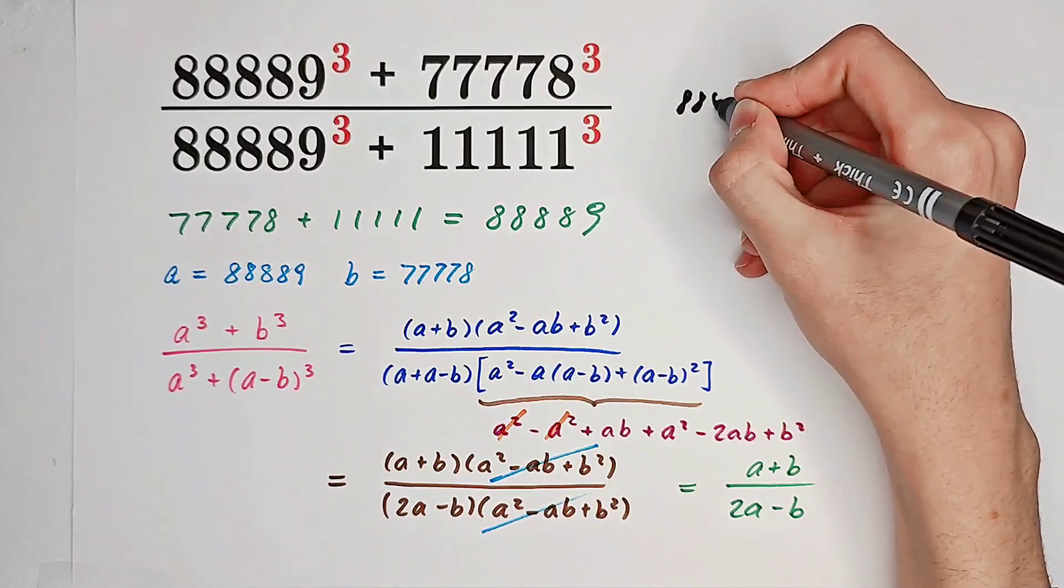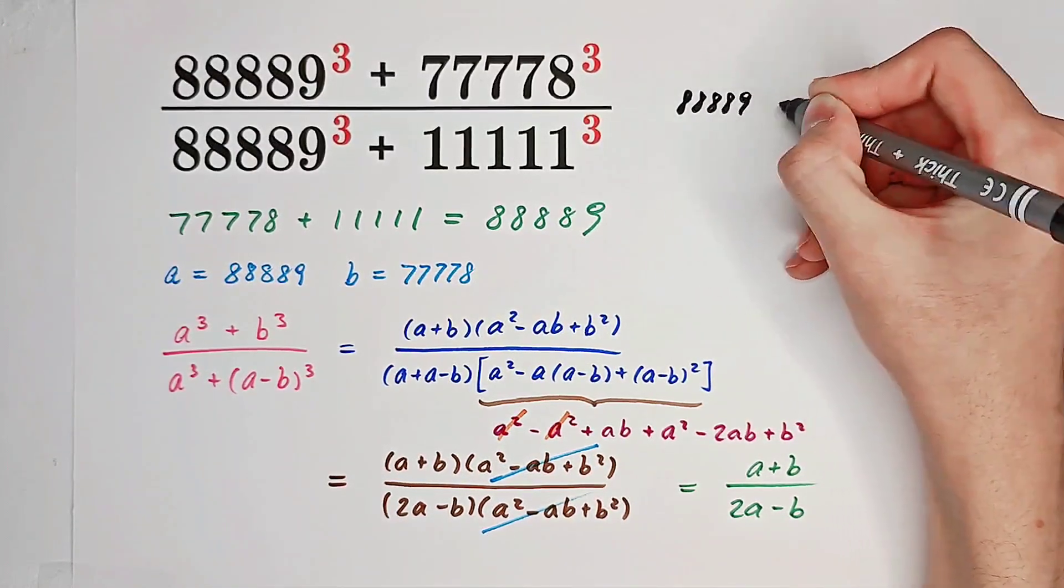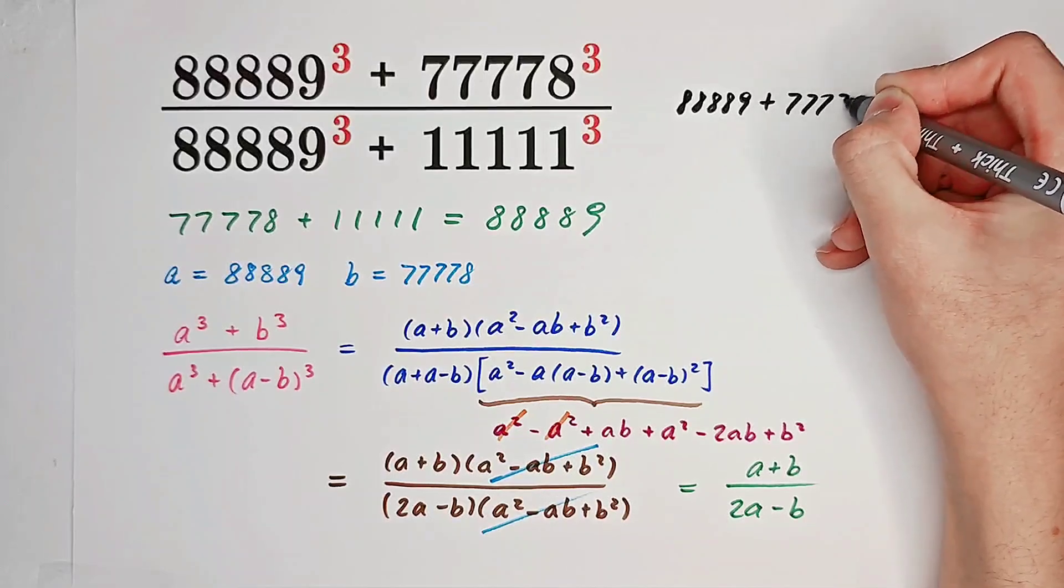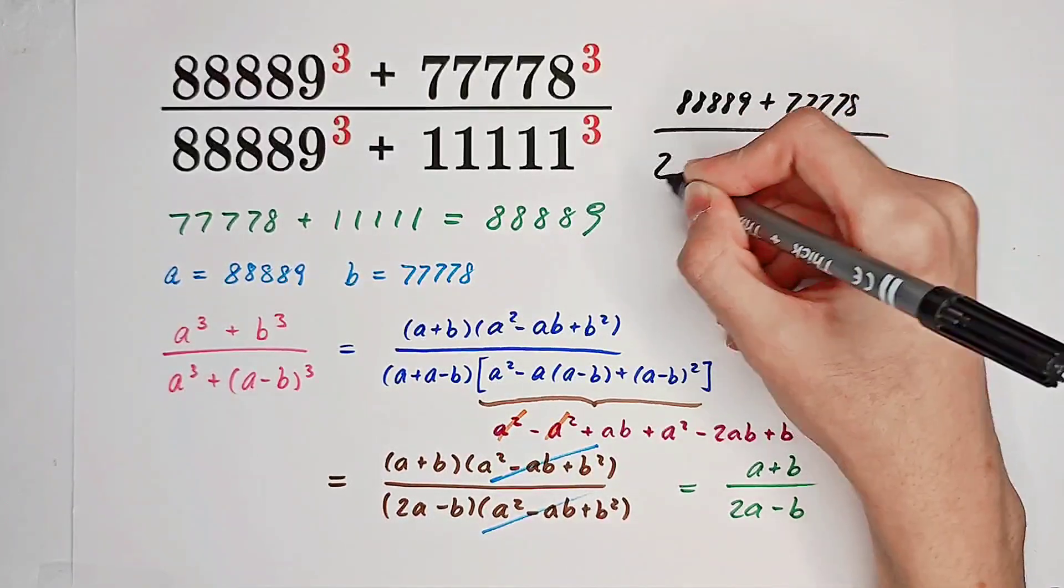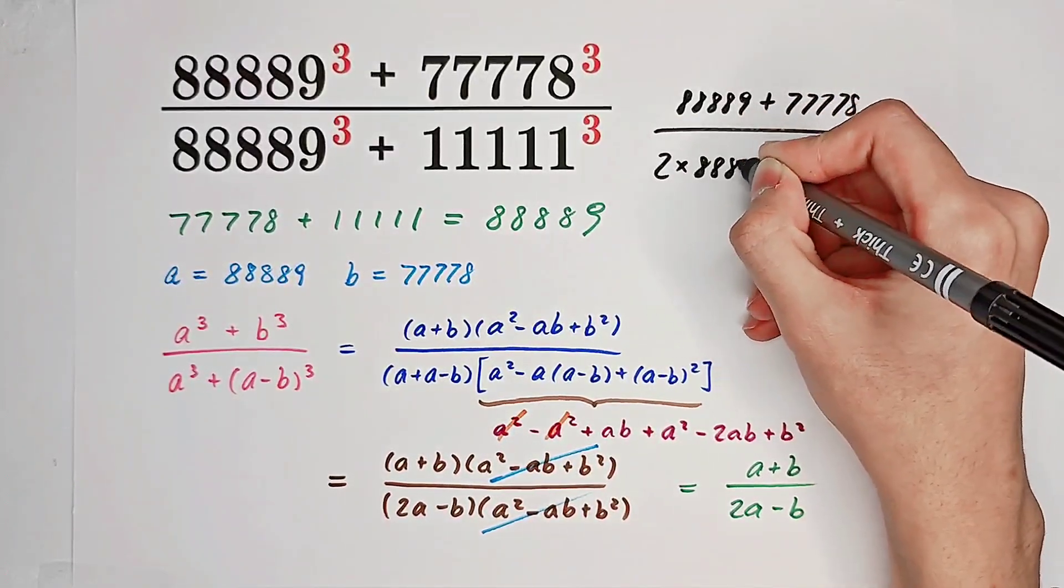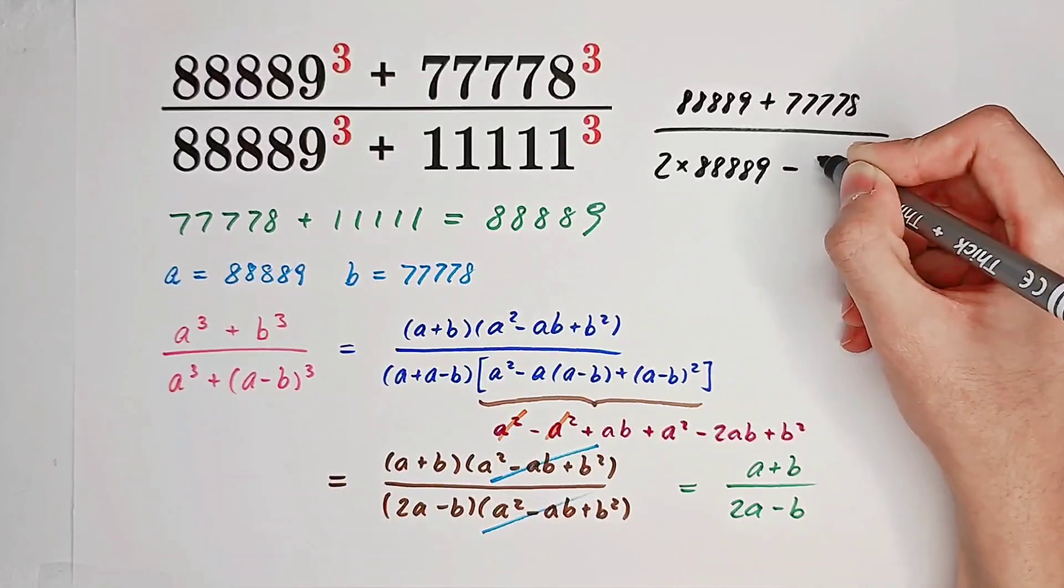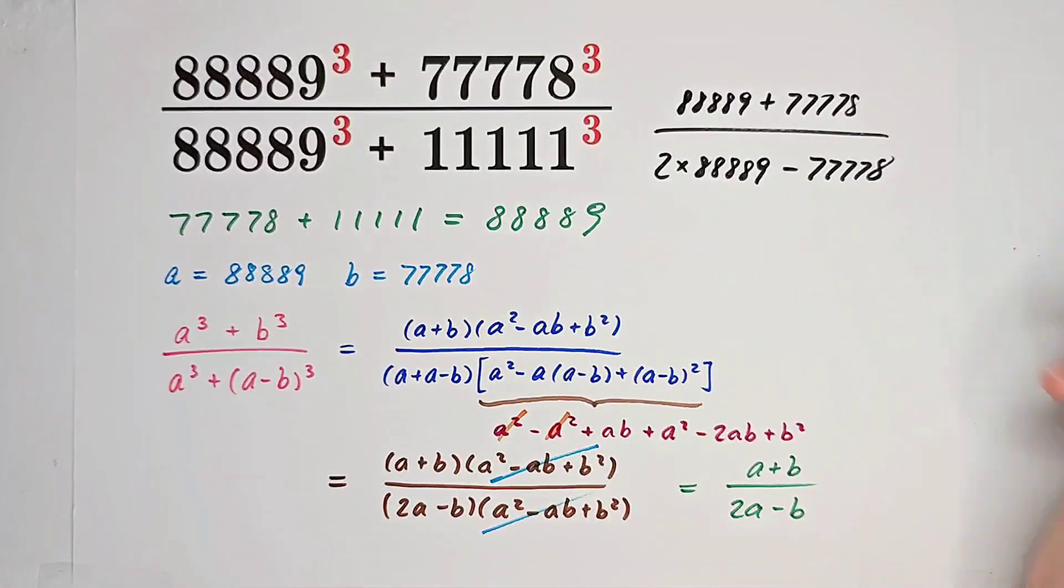The answer is just 88,889 plus 77,778 over 2 times 88,889 minus 77,778. So, just simplify the fraction yourself, and you'll get the answer. Do you get it? Give me a thumbs up, subscribe to me for more wonderful questions, and we'll see you next time. Bye-bye!